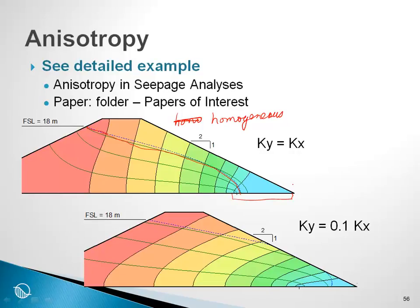Now, if you apply a 10 times anisotropy to this case, ky is one-tenth of kx, or in other words, kx is 10 times ky, we get this solution here, where we have a large downstream seepage phase.